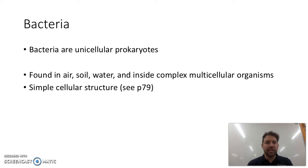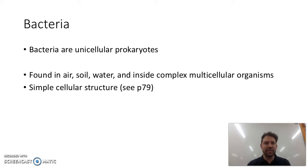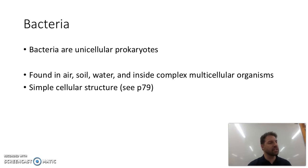Bacteria is the first one — unicellular. They're prokaryotic cells, and they're found in air, soil, water, and inside multicellular organisms like us. They're pretty simple. Have a look at page 79, figure 1.70, to see the structure.